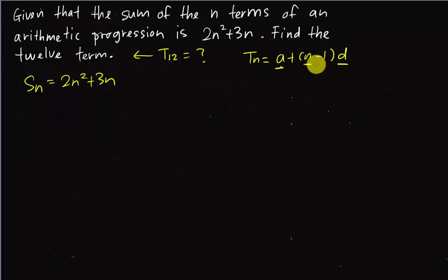But for this kind of question, there is no way for you to easily find a and d. Yes, if you want to find, you still can, but I will teach you a faster way to solve this. You have Sn. Sn basically means sum of the first n terms.